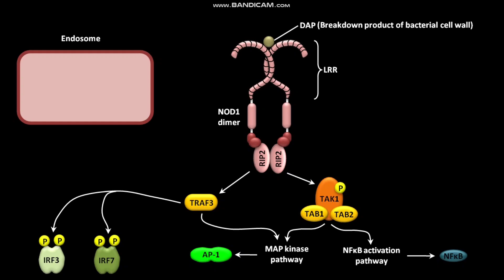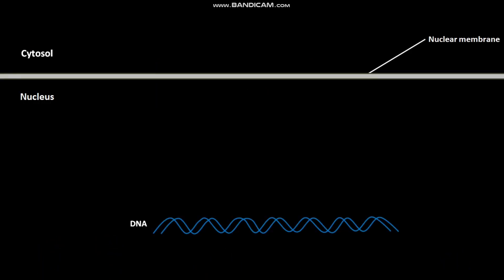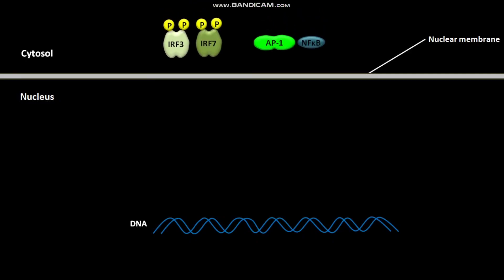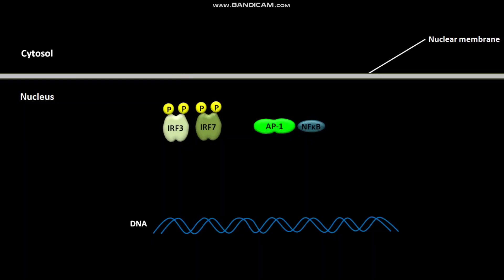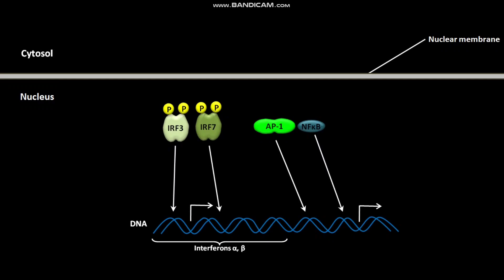The phosphorylated active IRF3, IRF7, active AP1, and active NF-κB then move into the nucleus. In the nucleus, these transcription factors bind to specific regions of DNA. By this binding, phosphorylated active IRF3, IRF7, active AP1, and active NF-κB cause transcription of genes encoding interferon alpha and interferon beta, as well as genes encoding cytokines, chemokines, and antimicrobials.